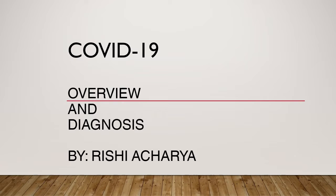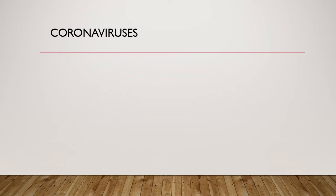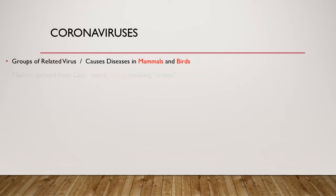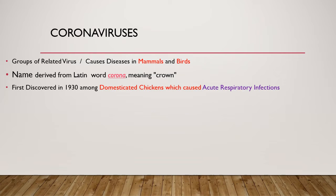Let me start with the topic coronaviruses. Coronaviruses are a group of related viruses that cause disease in mammals and birds. They also infect humans and cause respiratory infections which range from mild to severe forms. The name coronavirus is derived from Latin corona, meaning crown, since a coronavirus has dense protein spikes which appear as a crown structure. This structure can be seen in the electron microscope. They were first discovered in 1930 among domesticated chickens which were having acute respiratory infections.